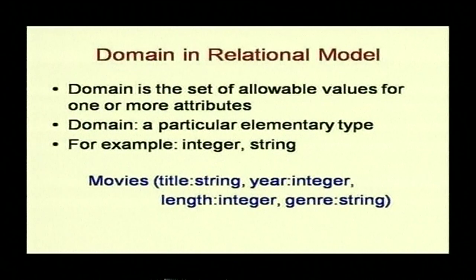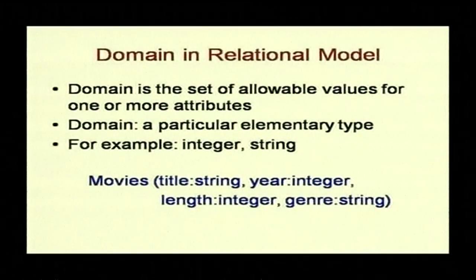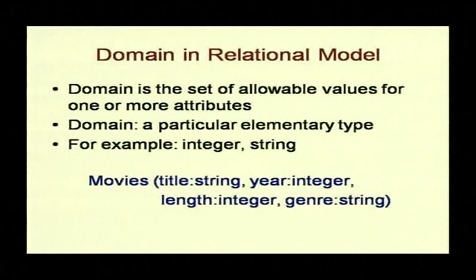The degree of a relation is the number of attributes, and the cardinality of a relation is the number of tuples it has. Domain is the set of allowable values for one or more attributes — it must be a particular elementary type such as integer or string. Each attribute of a relation is associated with a particular elementary type called its domain. The components of any tuple must belong to the domain of the corresponding attribute.